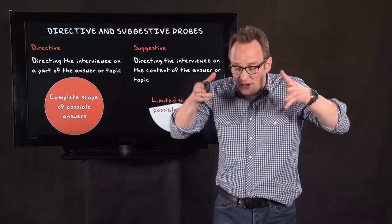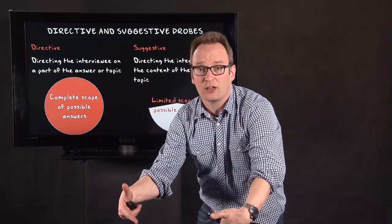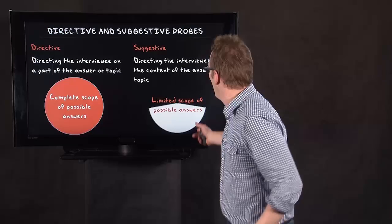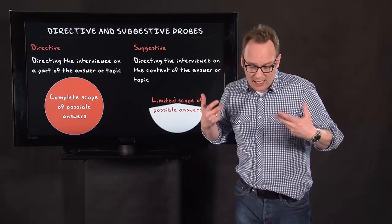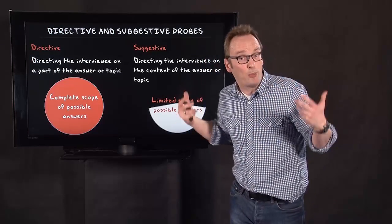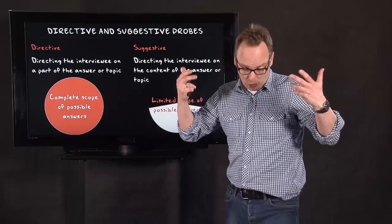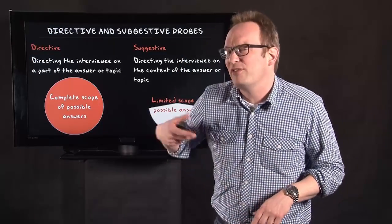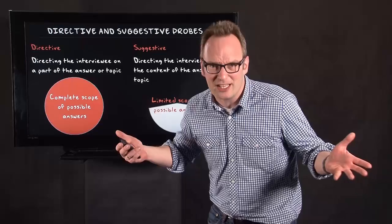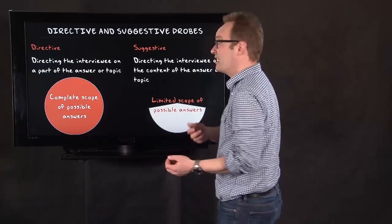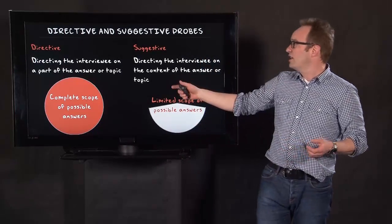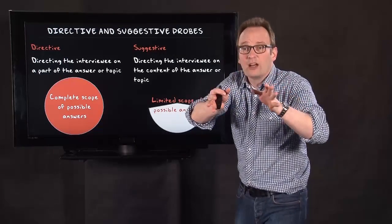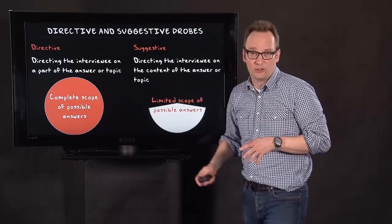So, you already give a direction on the content of the answer rather than the answer itself. So, what you do here is, for instance, on the example of how do friends turn into acquaintances, you give possibilities like, 'oh, because you never saw each other anymore,' or something like that. So, you give an answer as an interviewer. So, then you're not just directing the topic, but you're directing the content of an answer.